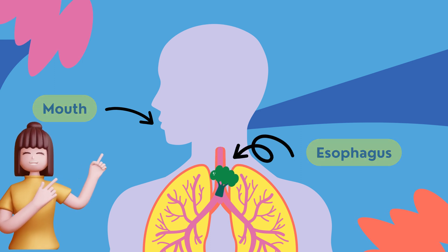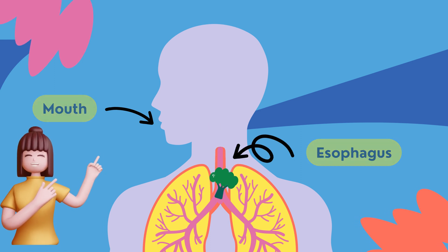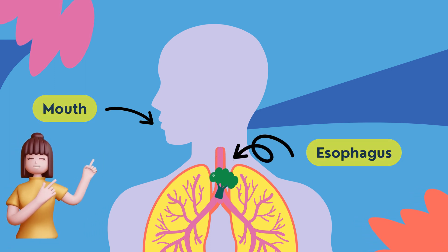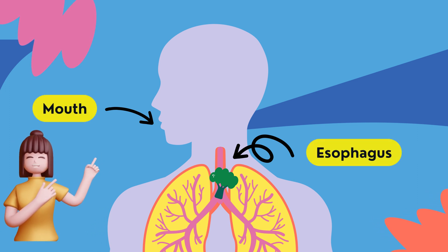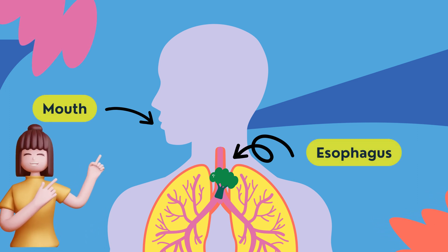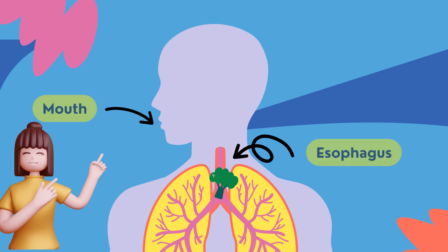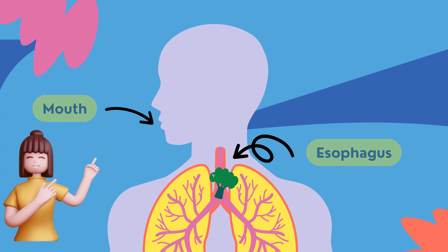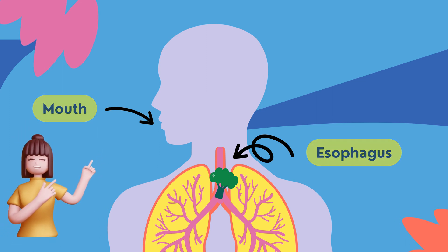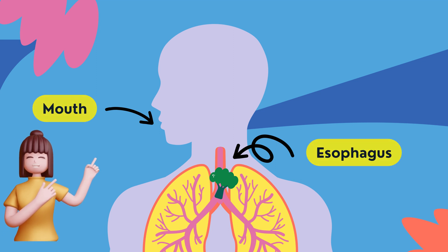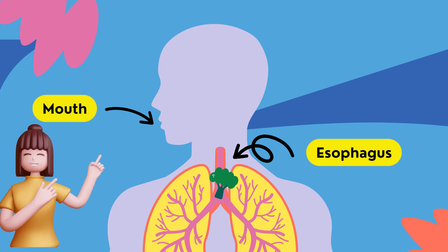Mouth. The digestive process starts in your mouth when you chew. Your salivary glands make saliva, a digestive fluid which moistens food so it moves more easily through your esophagus into your stomach.